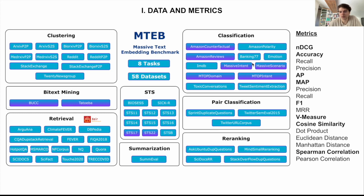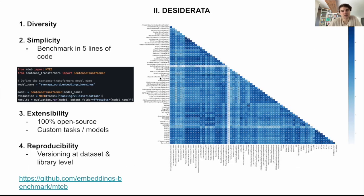Another thing to note is that we use Spearman correlation as the main metric. However, Pearson and many other metrics are also reported, so it's very easy for people interested in different metrics to just switch. We followed four guiding principles in setting up the benchmarking code and the datasets, the first one being diversity. Here on the right-hand side there's a correlation plot of all the datasets, and generally we don't find them to be super highly correlated. There are some with very strong correlation because they might use the same corpus — we have multiple datasets from Reddit and Stack Overflow — but generally it's quite diverse and covers a wide range of different topics.